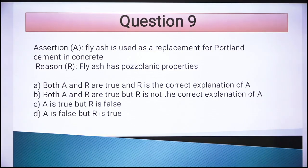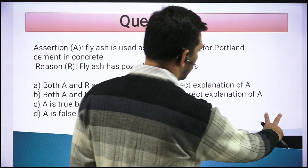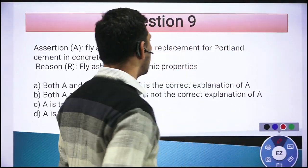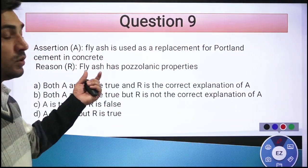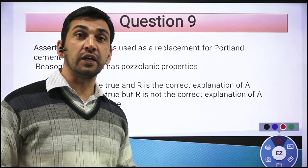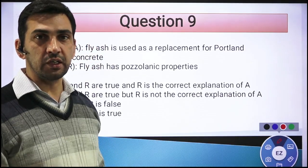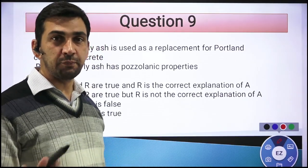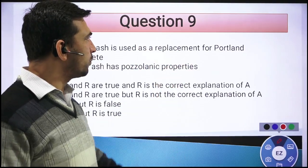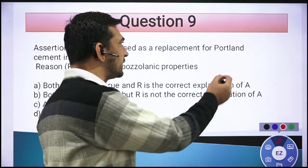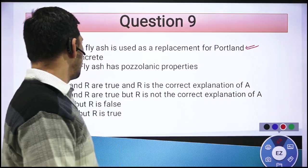The next question: Assertion — fly ash is used as a replacement for Portland cement in concrete. Reason — fly ash has pozzolanic properties. The assertion is correct — fly ash generated from coal-fired thermal power stations is a pollutant that can be utilized by replacing a portion of Portland cement in concrete. The statement about pozzolanic properties is also correct.